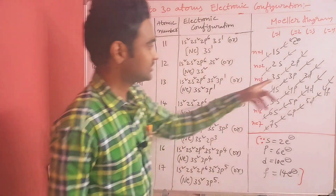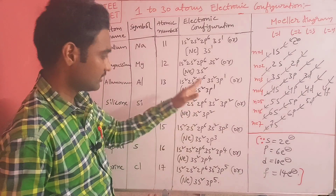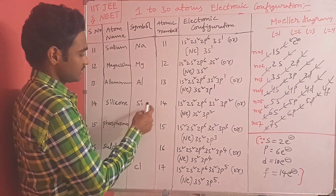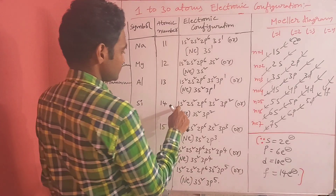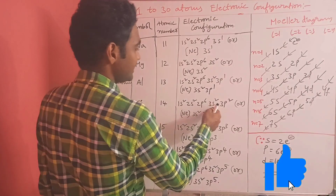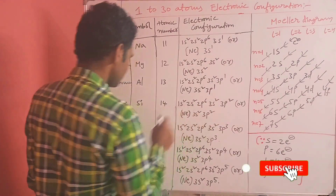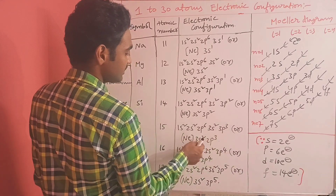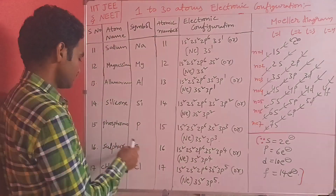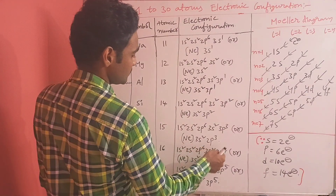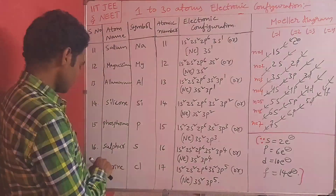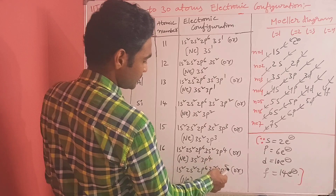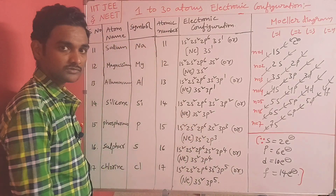The 3p orbital will fill with up to 6 electrons. Silicon (Si), atomic number 14: 1s2 2s2 2p6 3s2 3p2. Phosphorus (P), atomic number 15: [Ne] 3s2 3p3. Sulfur (S), atomic number 16: 1s2 2s2 2p6 3s2 3p4. Chlorine (Cl), atomic number 17: 1s2 2s2 2p6 3s2 3p5, overall [Ne] 3s2 3p5.